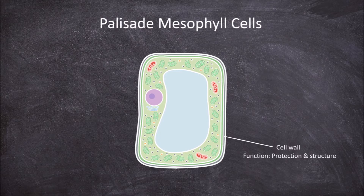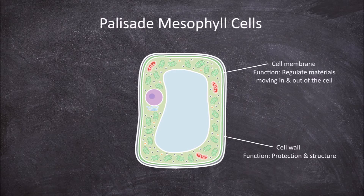In from the cell wall is the cell membrane. The cell membrane's function is in the regulation of materials into and out of the cell.